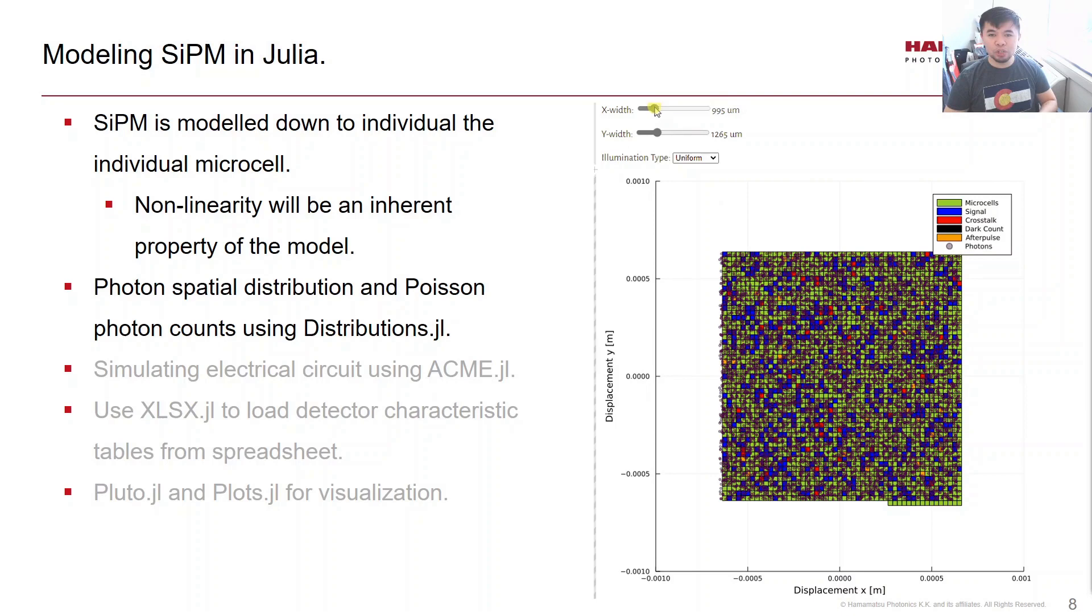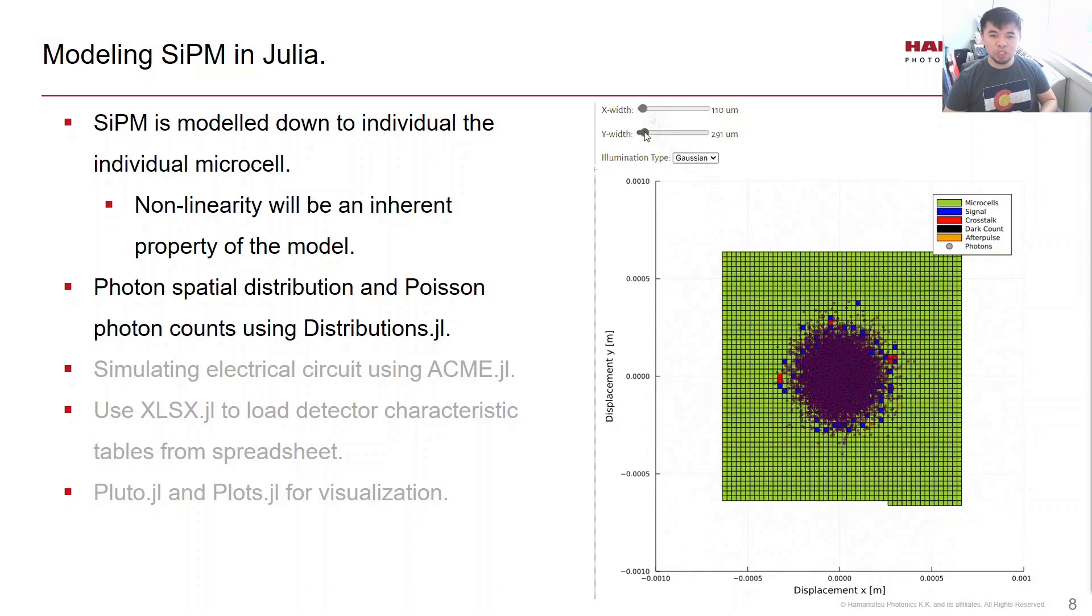We use Distributions.jl pretty extensively to distribute the photon positions in the x and y direction, as well as generating Poisson-distributed random photon counts.